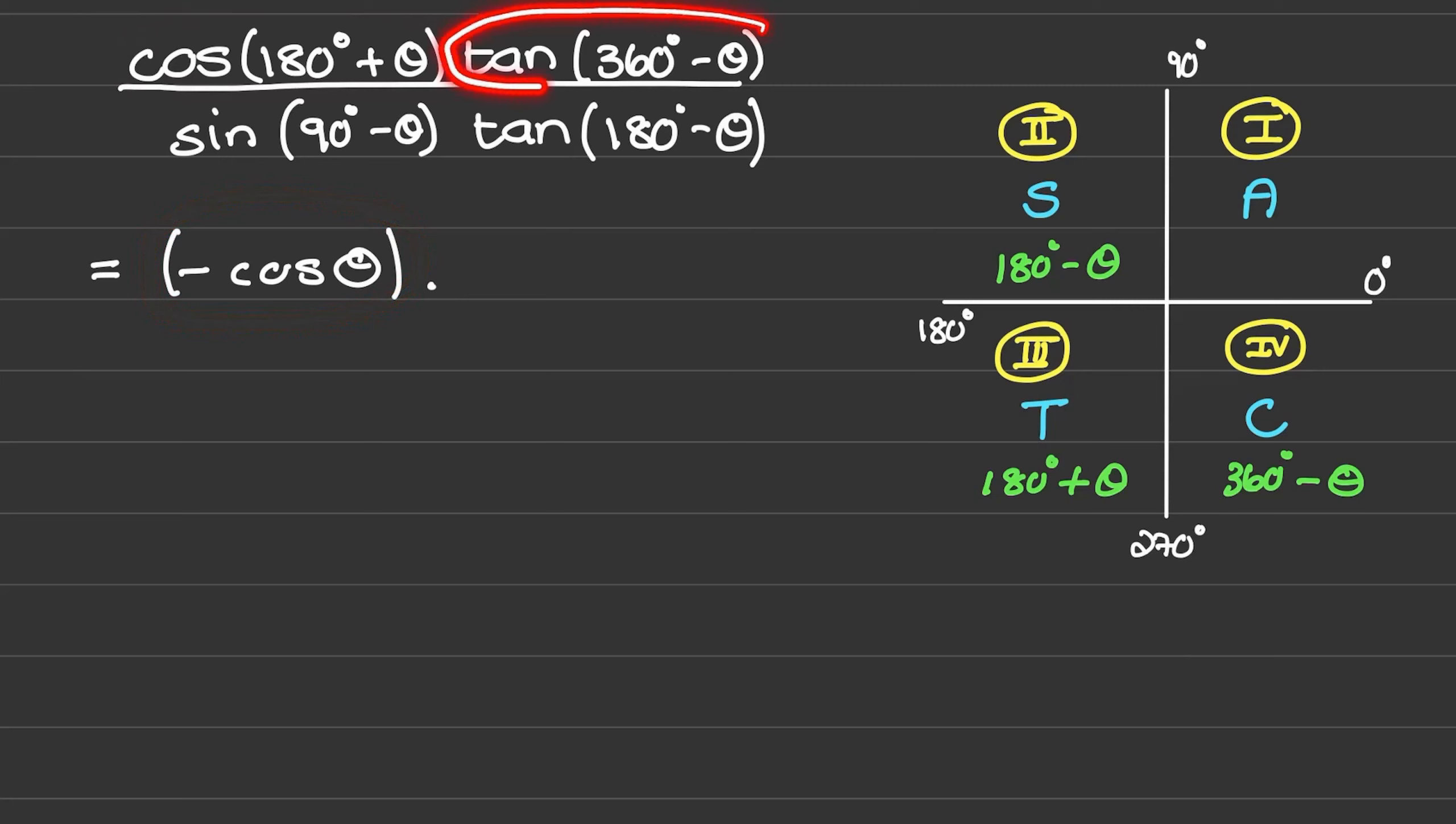Next we have tan of 360 minus theta. That is in the fourth quadrant and tan is negative in the fourth quadrant. So it will reduce to negative tan of theta.